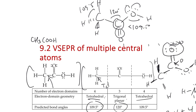When we show you a structure, you have to interpret whether it's a Lewis structure or the molecular geometry. If it's a Lewis structure, there was no intent to show the actual geometry. If it's the molecular geometry, then the proper geometry should be shown.